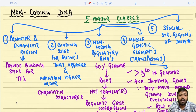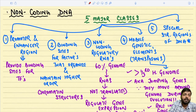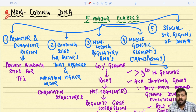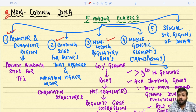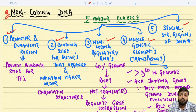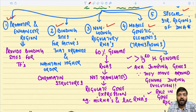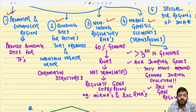There are five major classes of non-coding DNA: the promoter and enhancer region binding sites, non-coding regulatory RNAs, mobile genetic elements (also called jumping genes or transposons), and special structural regions of the DNA. Let us try and understand these five major classes.